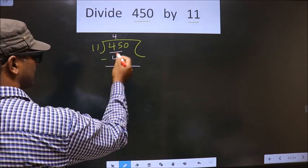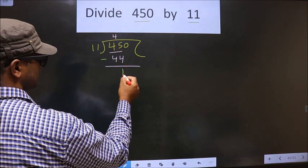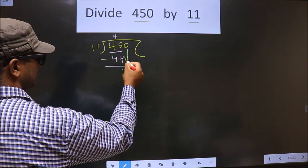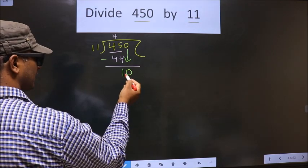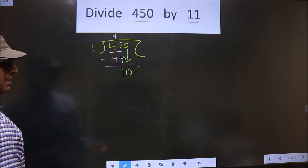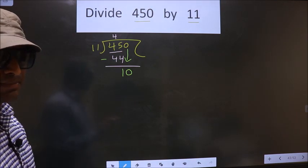Now you subtract: 45 minus 44 is 1. Now you bring this 0 down. So now here we got 10. 10 is smaller than 11. This is where the mistake happens.